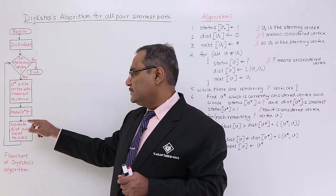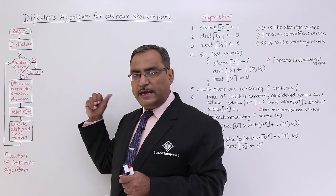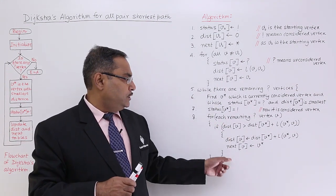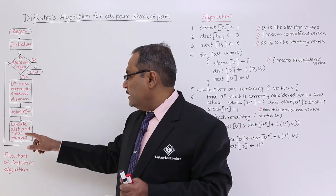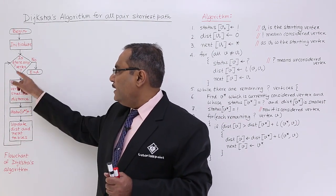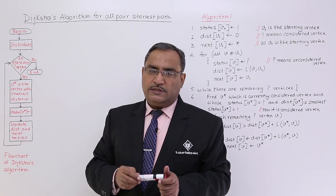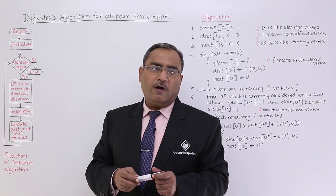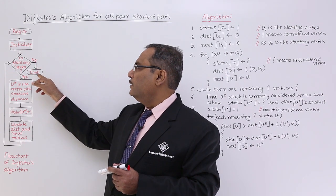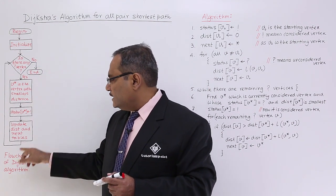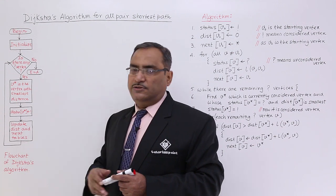So status of V star is equal to exclamation. Update dist and the next tables accordingly using this particular logic for the dist and using this logic for the status, and now go on continuing until there are no status V is equal to question mark vertices. And if it is so, if there are no such vertices are available, then go for end and that is my flowchart for Dijkstra's algorithm.